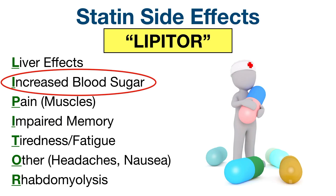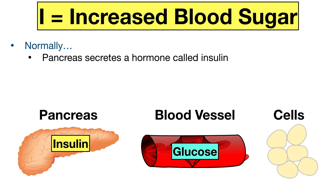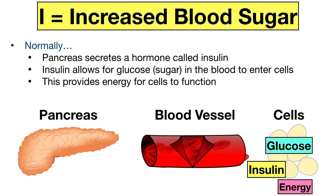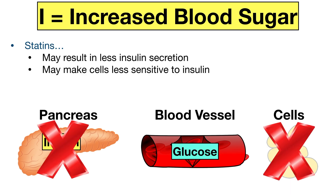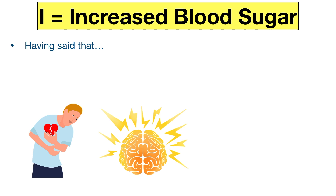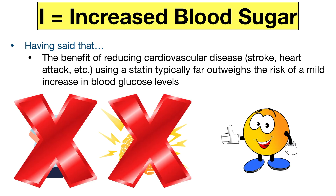The next side effect is the first I in Lipitor, which stands for increased blood sugar. Normally the pancreas produces and secretes insulin, which binds to receptors on cells allowing them to take up glucose from the blood for energy. The use of statins may decrease insulin secretion from the pancreas and make cells less sensitive to insulin, causing cells to have a harder time taking up glucose, which may lead to an increase in blood sugar. That said, the benefit of reducing cardiovascular disease — such as strokes and heart attacks — typically far outweighs the smaller risk of a mild increase in blood sugar, even in those who already have diabetes.